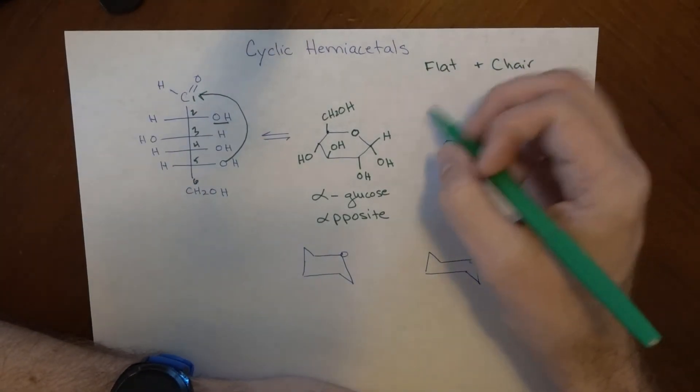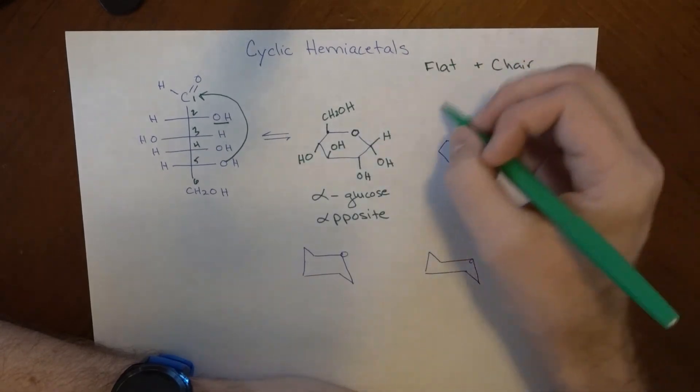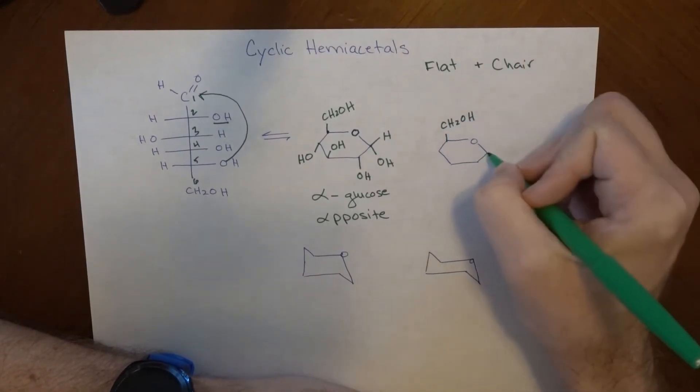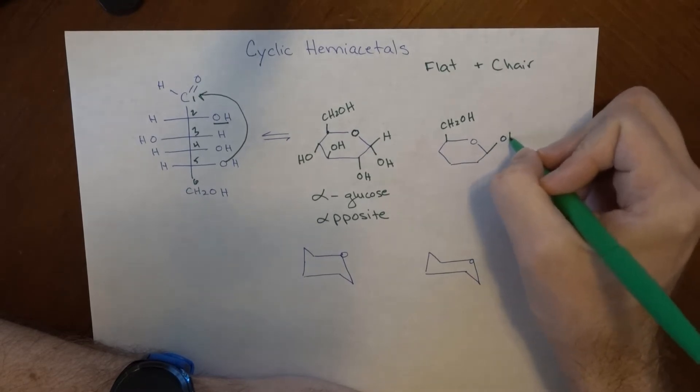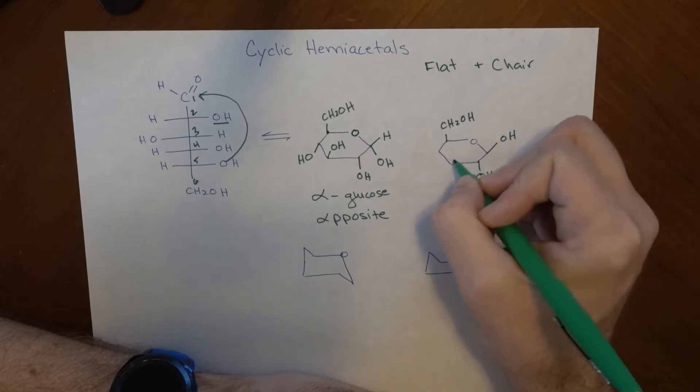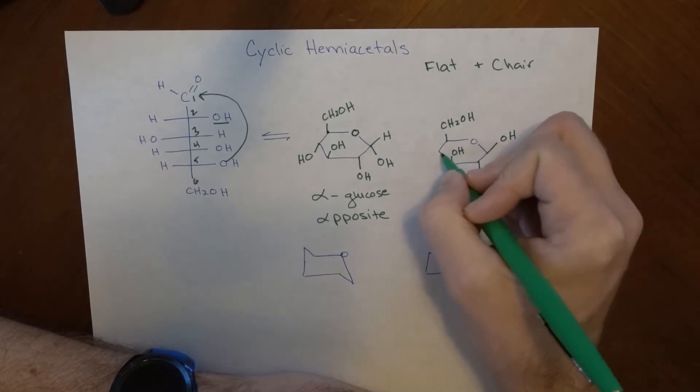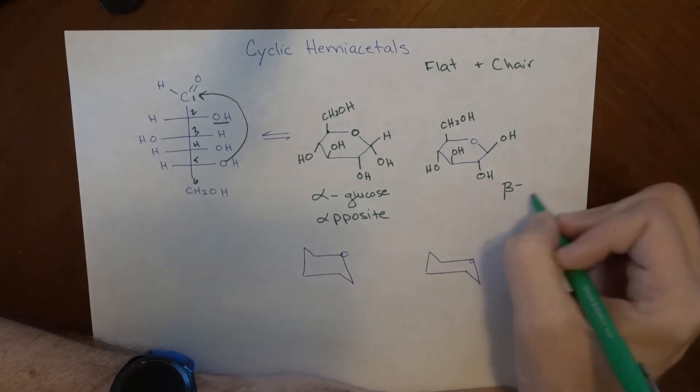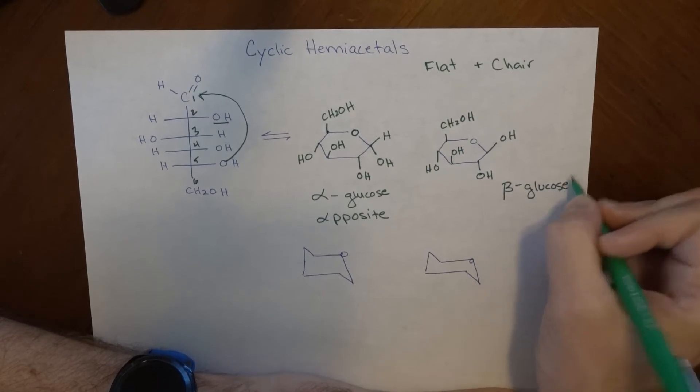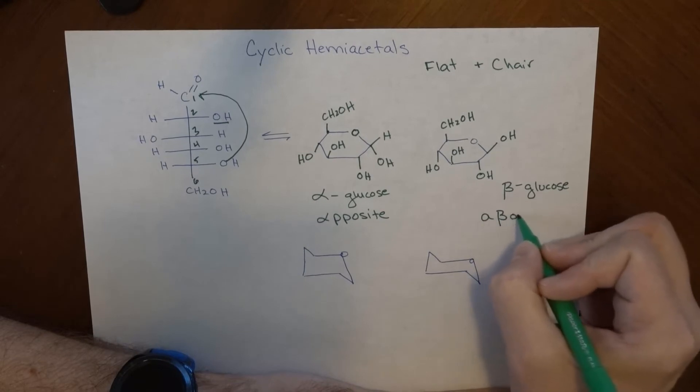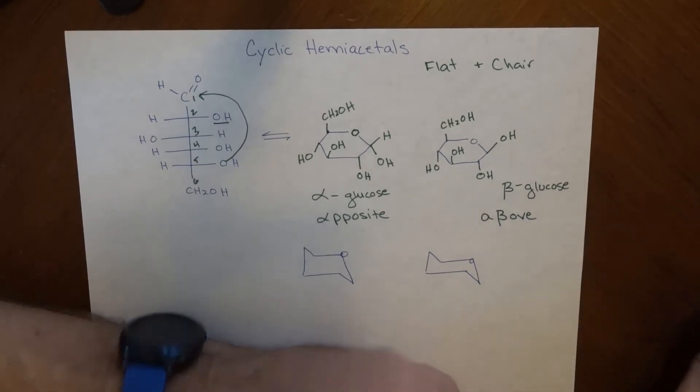Same thing can happen, however, remember this is flat and planar, so it can come from the other side, so our CH2OH is right here, and our OH is up here. Everything else stays in the same place, and this would be our beta glucose. And when both of these are above the plane, that's how I remember it, so the way I remember that is, like that, above.